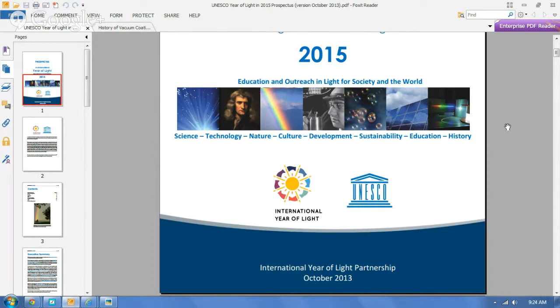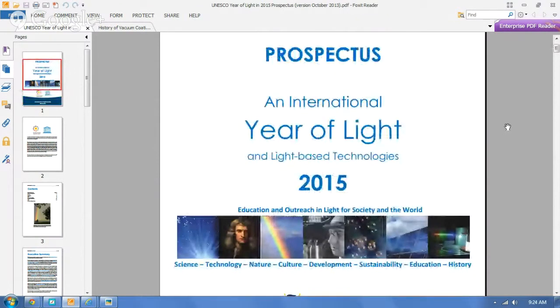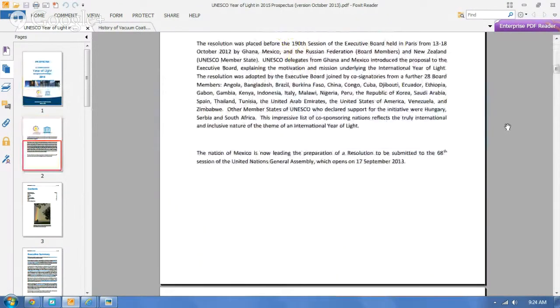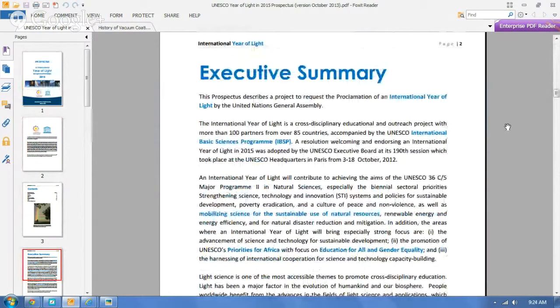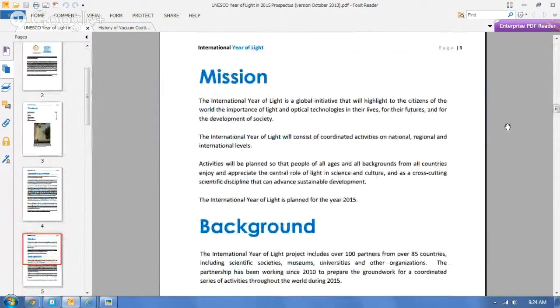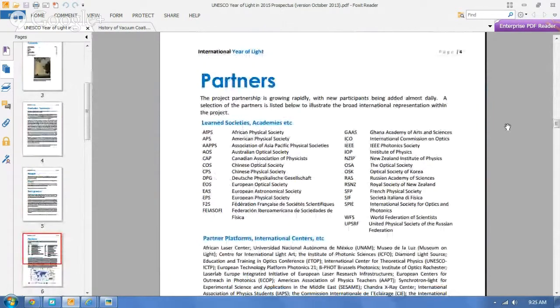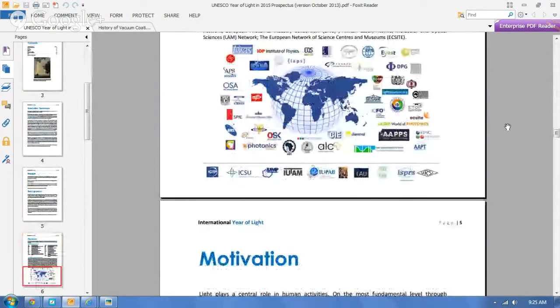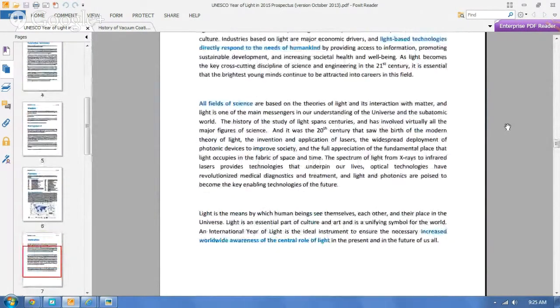Your cell phone, the camera in your cell phone. Most of your cell phone has been in a vacuum and coated. The LCD, the LEDs in there, they're all optics and thin films requiring light. And so it's excellent that UNESCO is coming out with this. 2015, hopefully it goes through. This is a prospectus, an international year of light and light-based technologies.